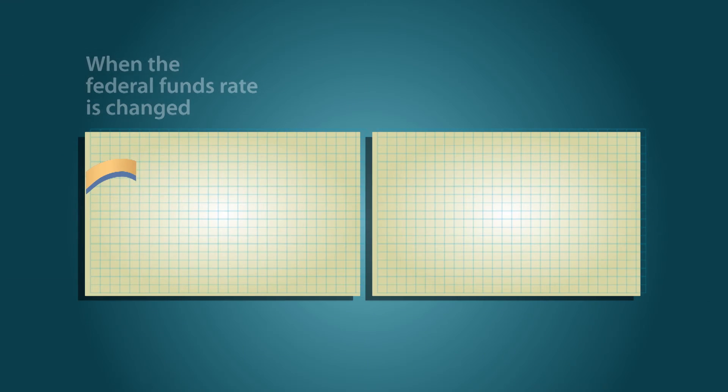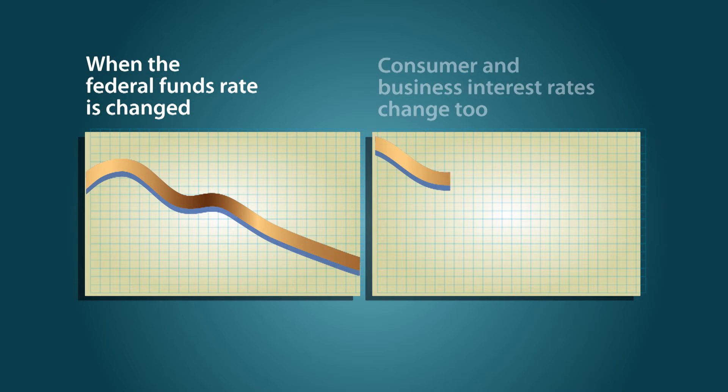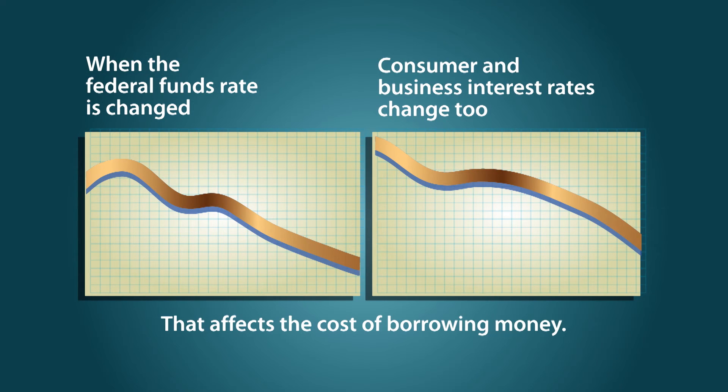But why is the Federal Funds Rate so important to monetary policy? Because it affects interest rates banks charge each other and their customers, and that affects the economy as a whole. Even a quarter of a point rise or fall in the Federal Funds Rate is a big deal. The goal of all the effort that goes into monetary policy is to help keep prices stable and to foster maximum employment.